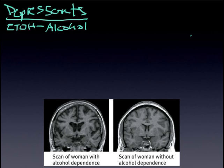One of the things that jumps out as you're paying attention and looking at it is the ventricles — how enlarged they are — which essentially means that you have an atrophy of brain tissue as a result of the alcohol dependence.